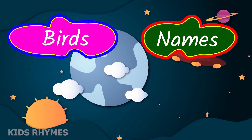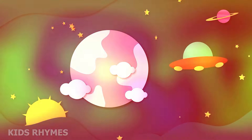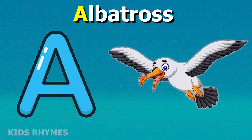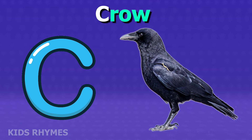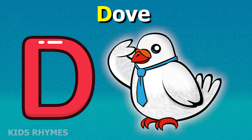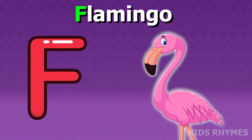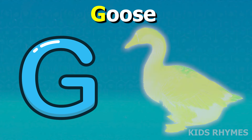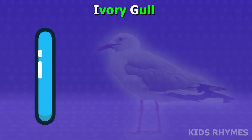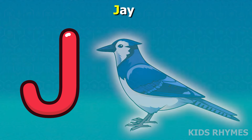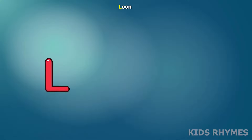Bird's name according to alphabet: A for albatross, B for blue jay, C for crow, D for dove, E for eagle, F for flamingo, G for goose, H for hen, I for ibis, J for jay, K for kingfisher, L for lark.